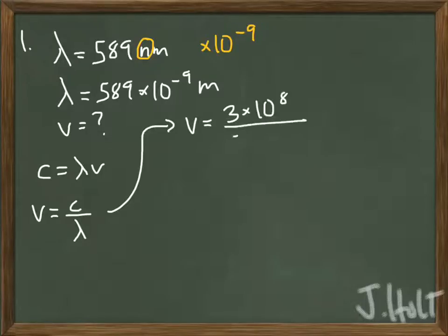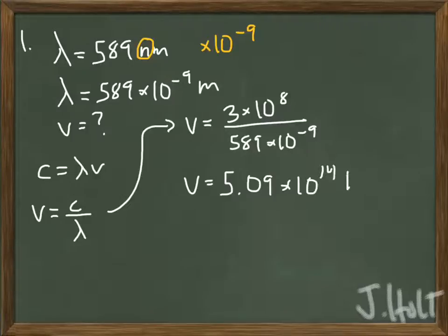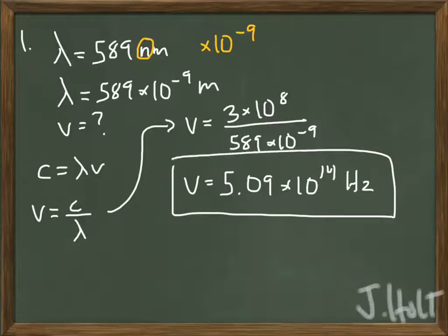So c is 3 times 10 to the 8th, that's the speed of light, that never changes, and lambda is 589 times 10 to the negative 9th. That was given in the problem. If you type that into your calculator, then you should get this answer for frequency. The unit for frequency is hertz.